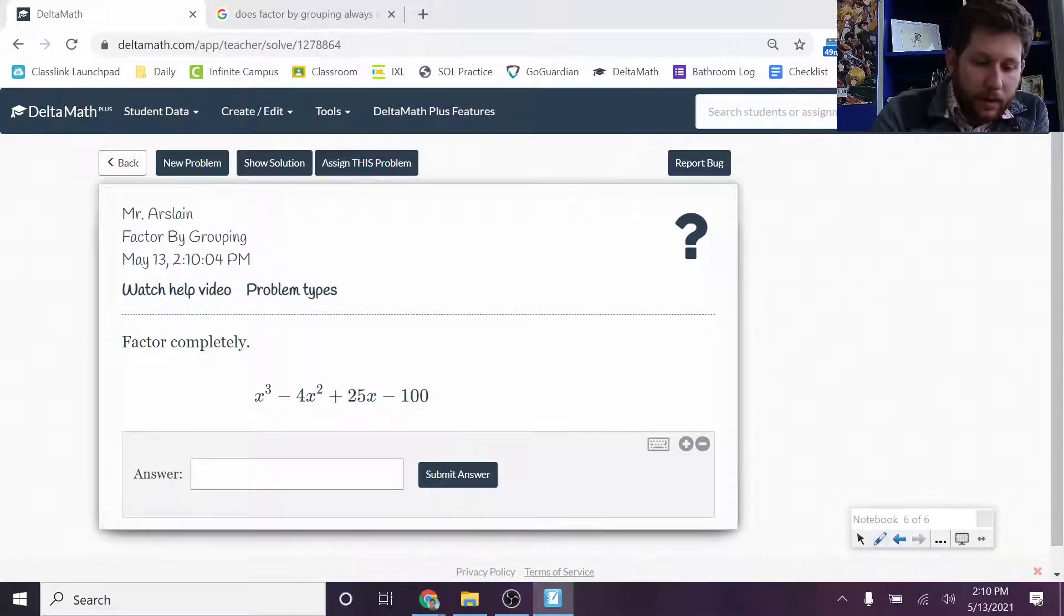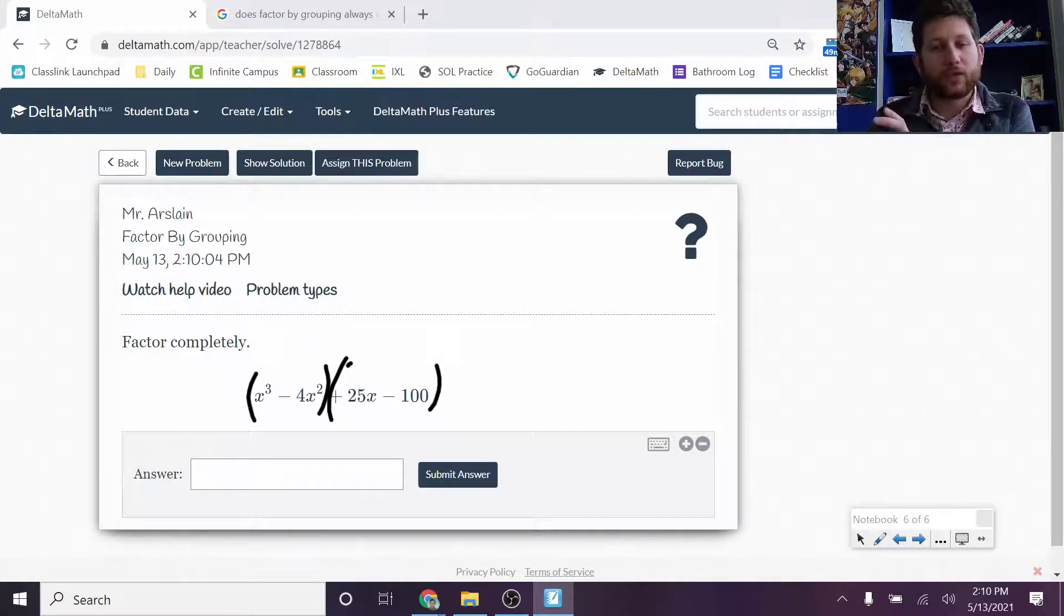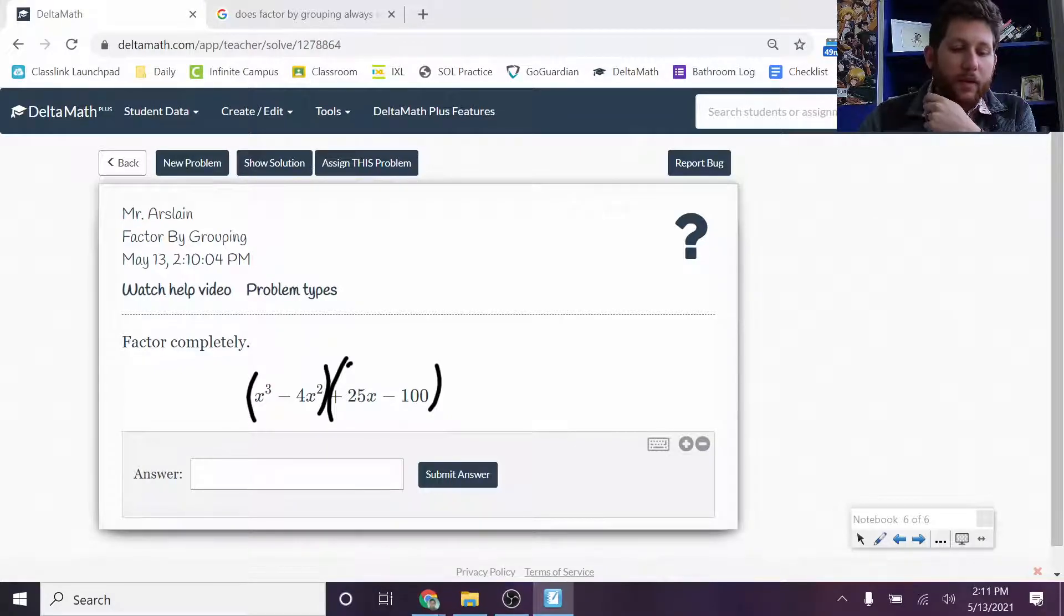The first thing you're going to do is you're going to go ahead and group the first two parts and the last two parts. Now look, this plus 5, or the plus we're going to put with this 25x minus 100. Now be careful. I know I've grouped with parentheses, which would imply multiplication, but I don't want you to think about multiplication here. We're just thinking first two terms, last two terms. That's how I'm grouping it. Don't think that now we're going to multiply them together.